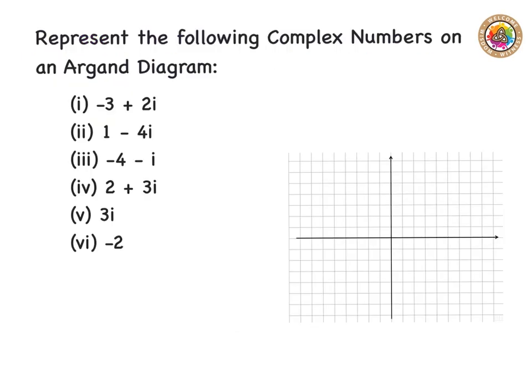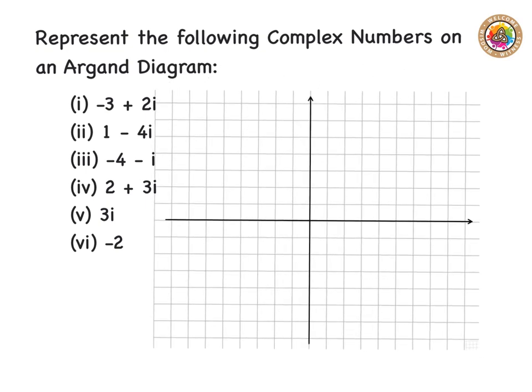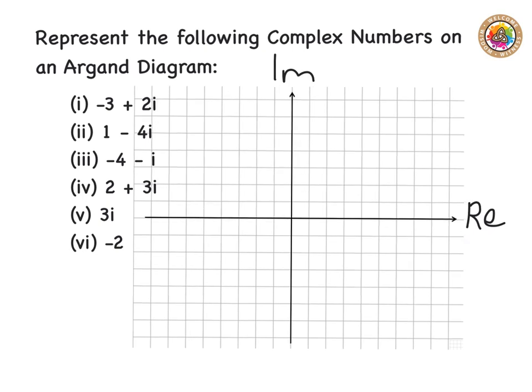We're asked to represent the following complex numbers on an Argand diagram. First, I draw my vertical axis and my horizontal axis and label them — my horizontal axis is the real axis and my vertical axis is the imaginary axis.